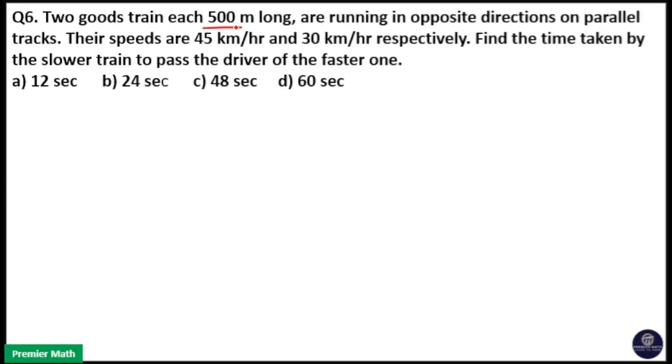Two goods trains, each 500 meters long, are running in opposite directions on parallel tracks. Their speeds are 45 kilometers per hour and 30 kilometers per hour respectively. Find the time taken by the slower train to pass the driver of the faster one.